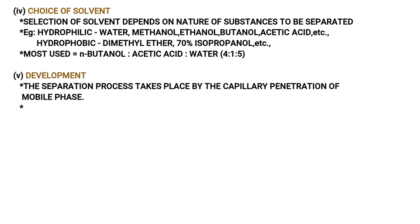The fourth point is the choice of solvent. Selection of solvent depends on the nature of the substance to be separated. For hydrophilic substances, the solvent used is n-Butanol and Acetic Acid. For hydrophobic substances, the solvents used are Dimethyl Ether or 70% Isopropanol.